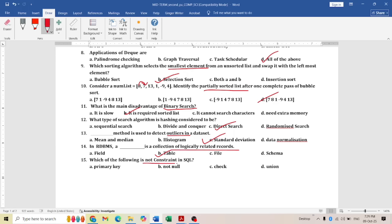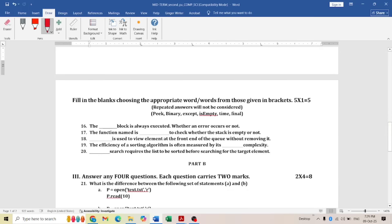Next: in RDBMS, a dash is a collection of logically related records. Logically related records means table. Which of the following is not a constraint in SQL? Primary key, not null, check—all are constraints. Union is not a constraint; it is an operation. Next: dash block always executed when an error occurs or not. Error or not, the final block, even if the try block is correct. The function used to check whether the stack is empty or not is 'is empty.'